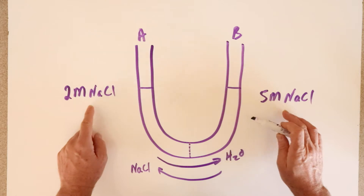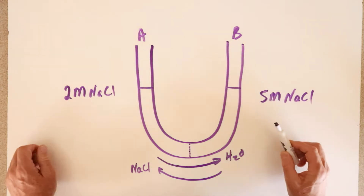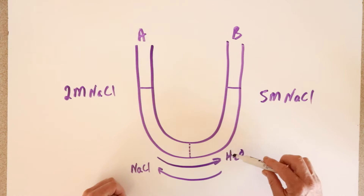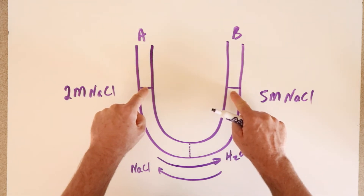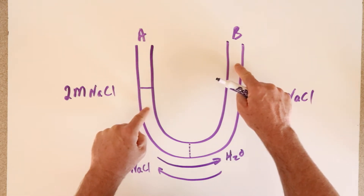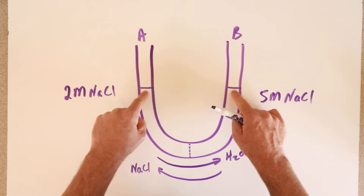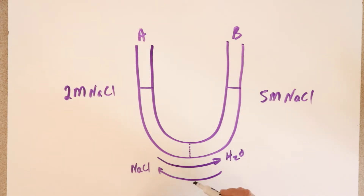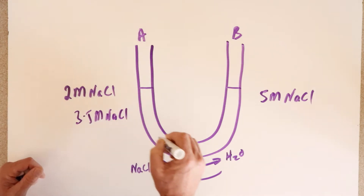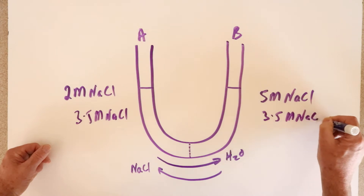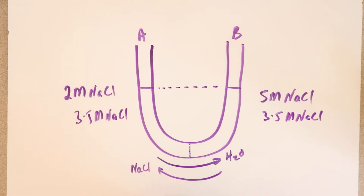As water, sodium, and chloride ions begin to equilibrate, the water level change would probably start to reverse and come back down. You have an interesting dynamic: water molecules and ions are diffusing in opposite directions initially. Eventually it returns to an equilibrium point where there is exactly the same water level on each side, and we would have exactly the same molarity on each side — in this case 3.5 molar sodium chloride on each side — with equal water levels.